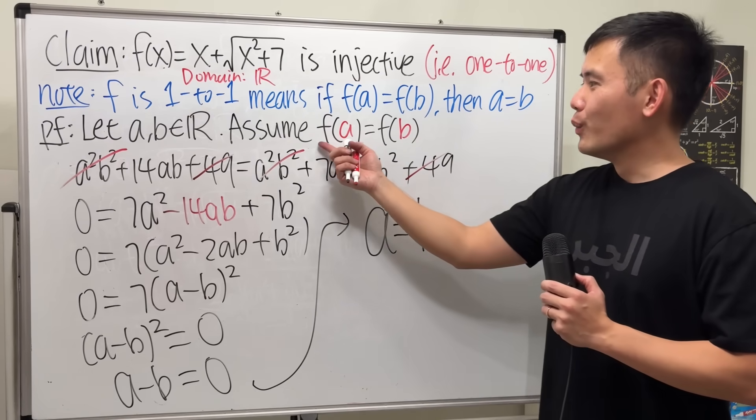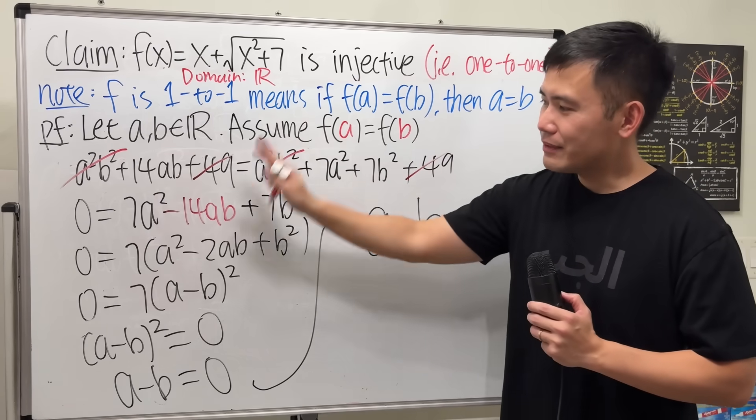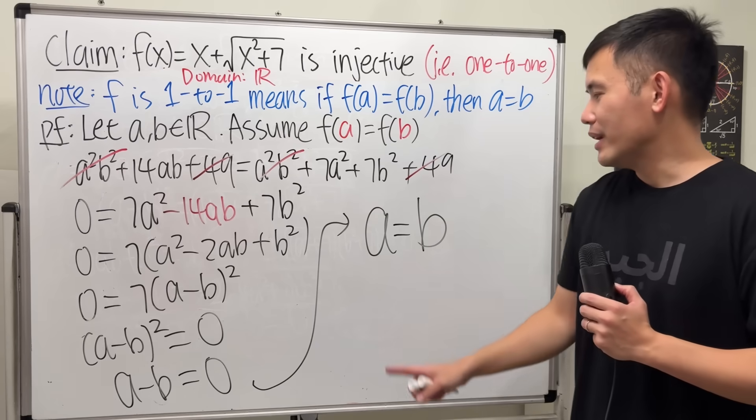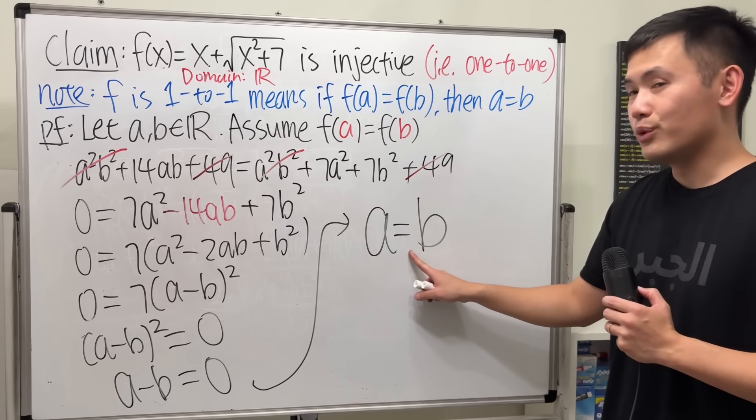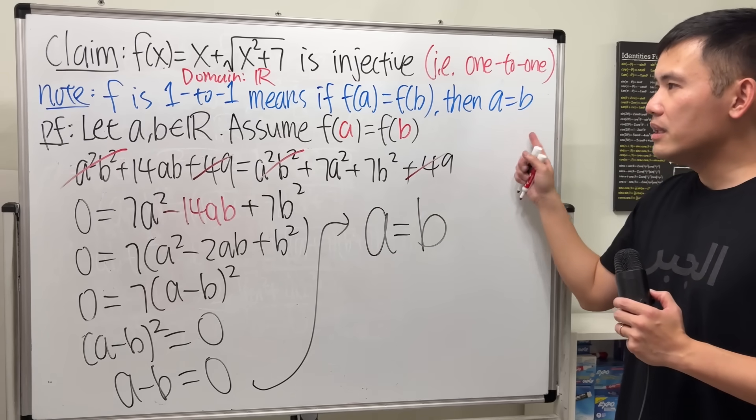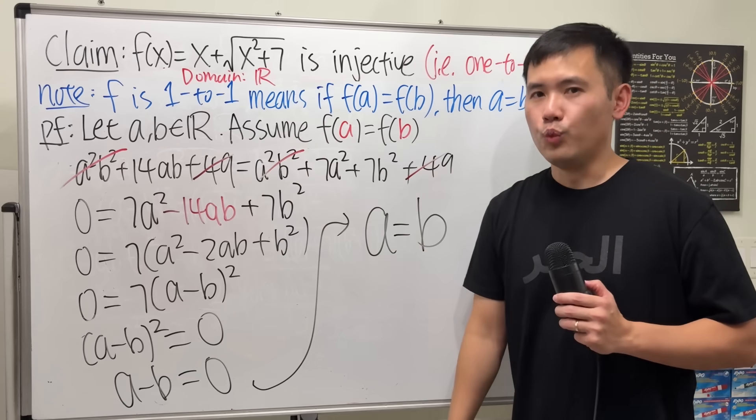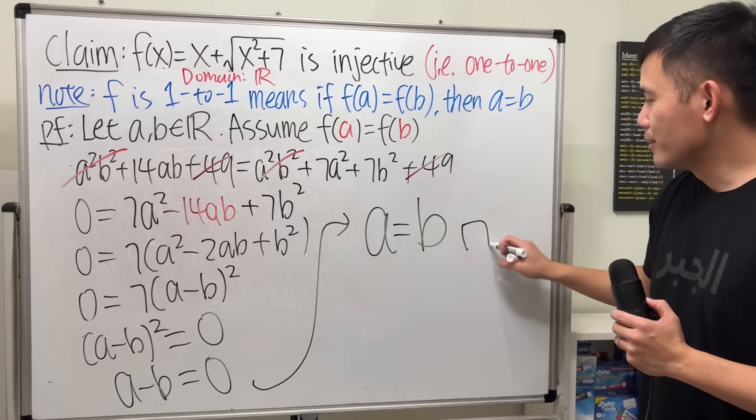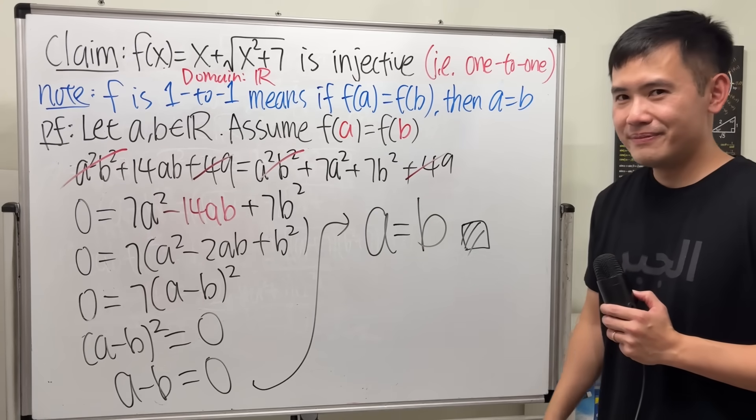And as we can see, once we have this assumption, after all the algebra, we end up with a is equal to b. That is exactly what we need to show a function is 1 to 1. So, we are done. Put a box. Shading in. That's it.